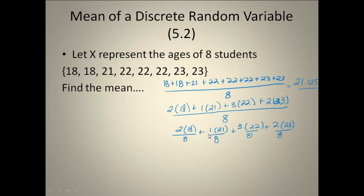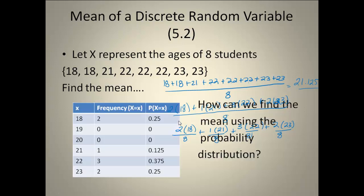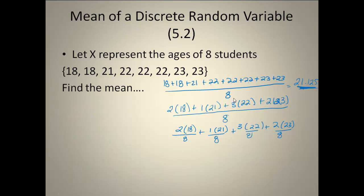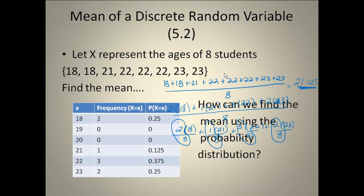The next thing I want to know is how can I use these ideas and my probability distribution to get my mean without having to do all this addition and subtraction. Come back to this bottom one right here. The 18 comes from our problem, but where does the 2 over 8 come from? If you look at our probability distribution, 2 over 8 is actually 1 fourth, which is 0.25. So when I'm looking at this 18, I could use my probability of 0.25 instead of having to do the 2 over 8.